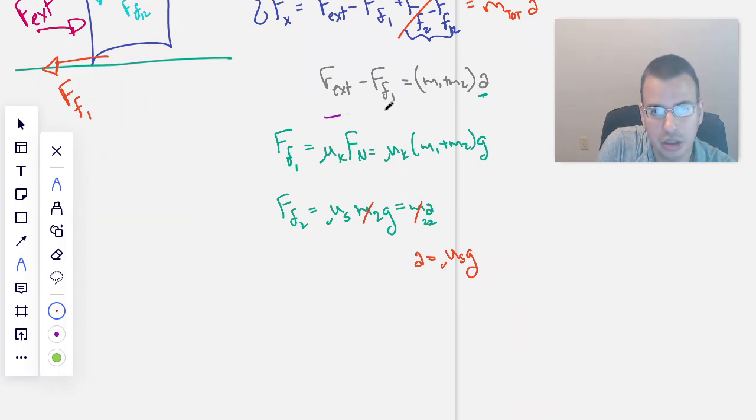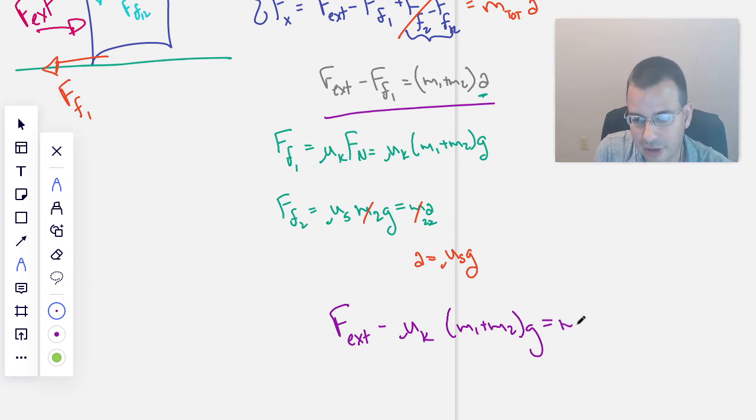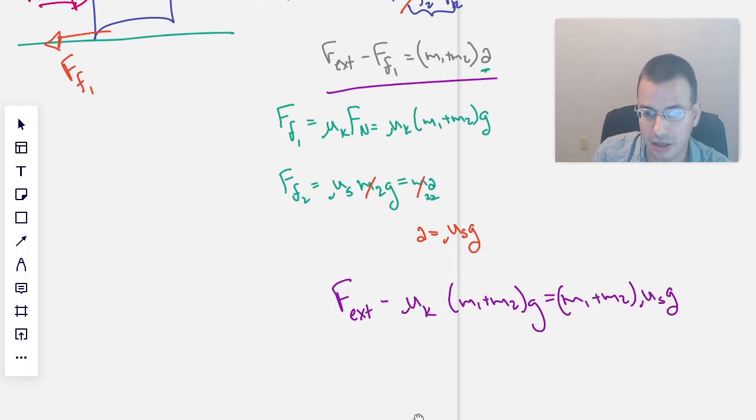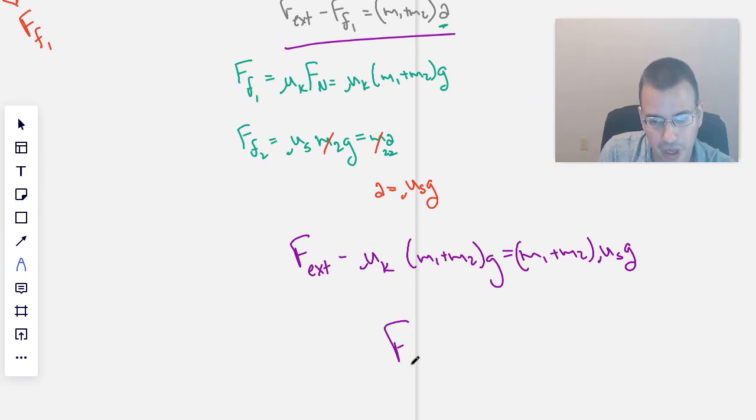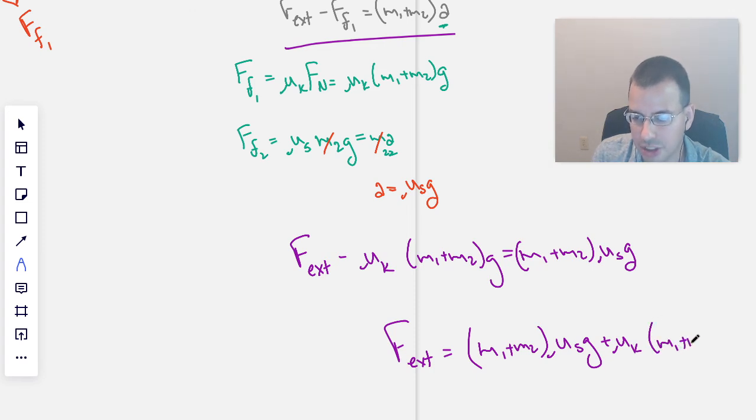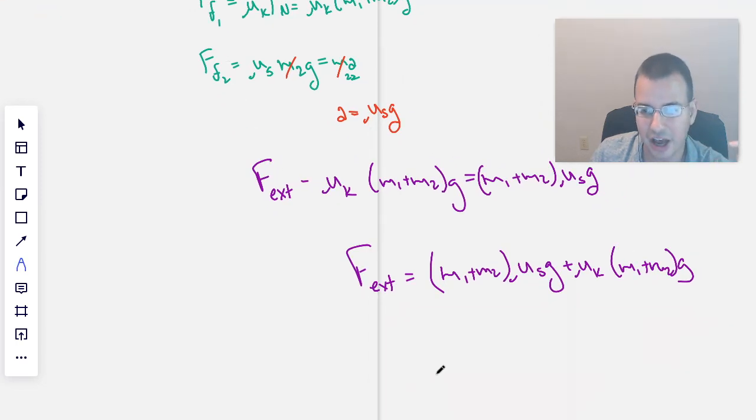So we're going to take this equation right here, force external minus, and for force of friction 1, I'm just going to write this out, minus μ_k (mass 1 plus mass 2) times gravity equals, and then on the other side we have (mass 1 plus mass 2) times acceleration, which we know as μ_s times gravity. All right, doing some algebra, we have force external equals (mass 1 plus mass 2) times coefficient of static friction times gravity, and that static is between 1 and 2, plus μ_k (mass 1 plus mass 2) times gravity. I'm going to factor out a (mass 1 plus mass 2) and gravity: (mass 1 plus mass 2) times gravity times (μ_s plus μ_k).